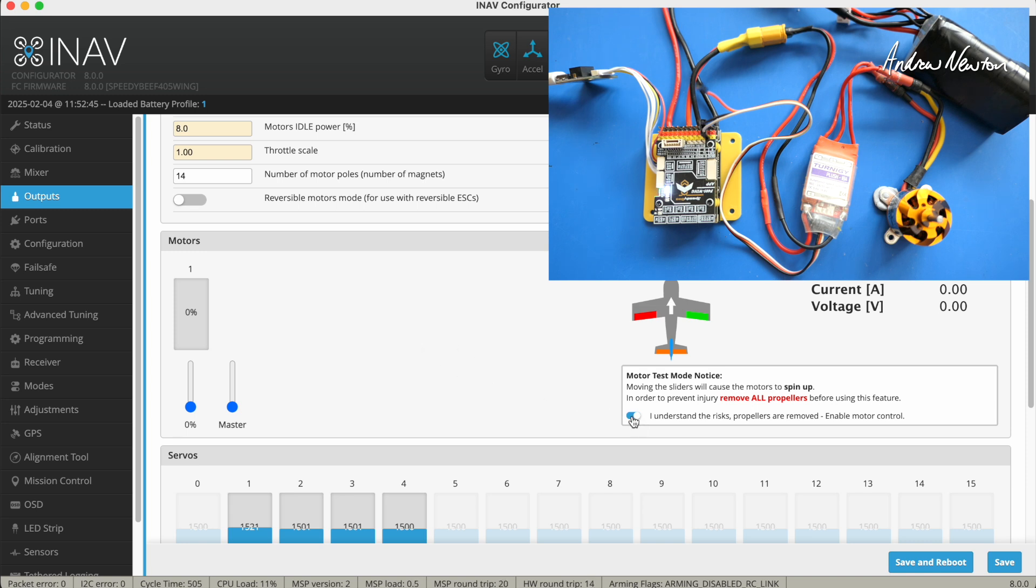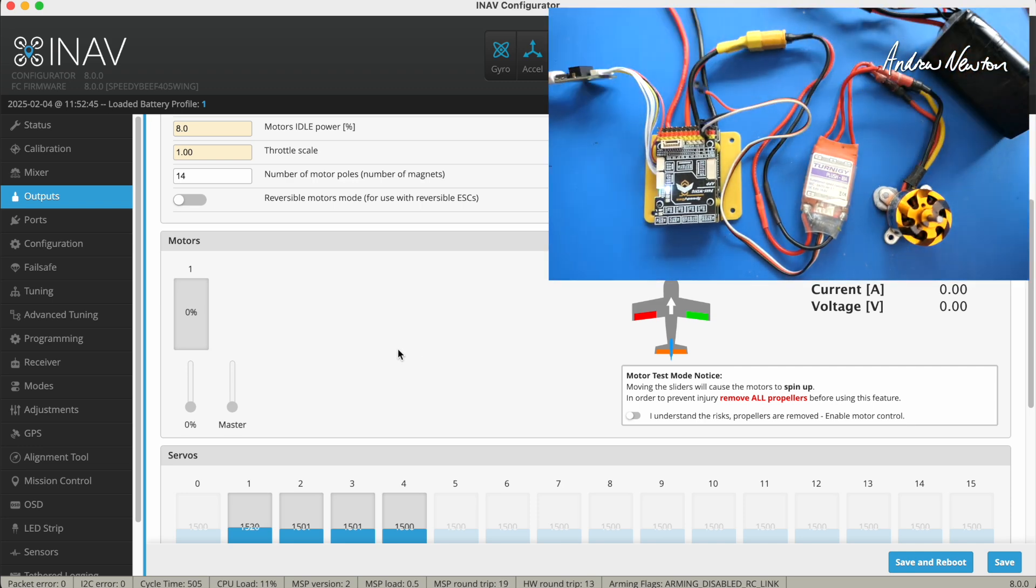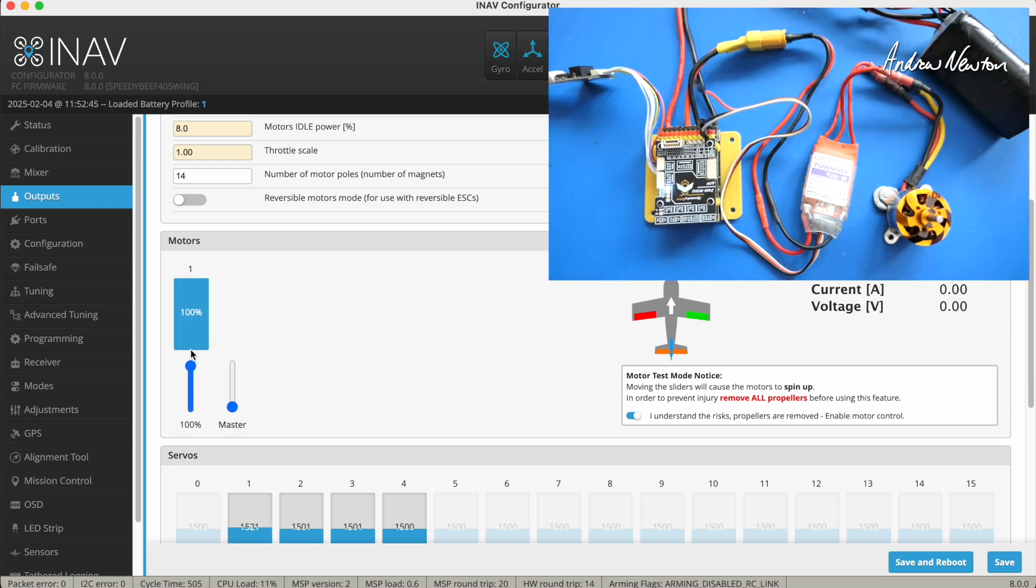Now if the ESC is making all these horrible beeps all the time when you first connect it up, that means you need to calibrate your ESC using the configurator. We'll do that now. So unplug the battery, put the motor slider up to full, connect the battery, wait for those two beeps, pull the slider down to zero. That tells you that the ESC is now calibrated to the range of PWM values coming from the board.